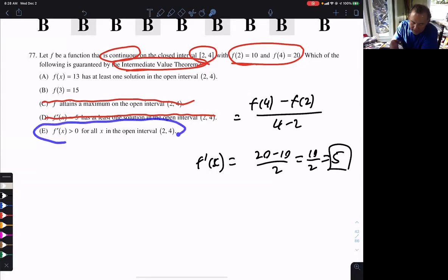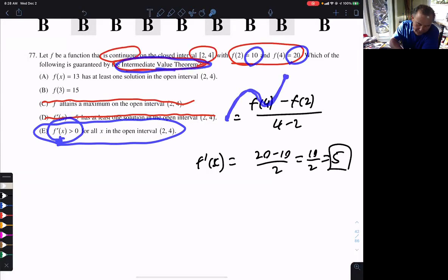The derivative is positive. That means the function is always increasing, right? If the derivative is positive, it means the function is increasing from 2 to 4. Is the function always increasing? Well, it goes from 10 to 20. Does that mean it always increased? No, because you can go 10 down and back up to 20. It could be increasing, decreasing, increasing. So that doesn't have to be true at all. Plus, that's not the intermediate value theorem anyways.